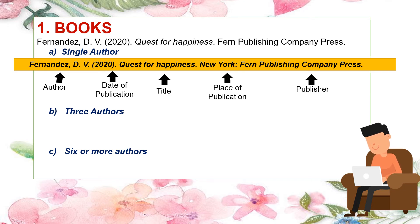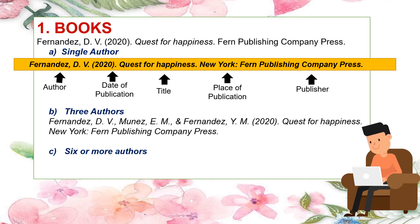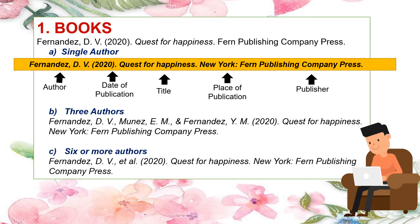When authorship reaches six, you use et al. Books with one-to-five authors take the usual format. For three authors: Fernandez, D.V., Munez, E.M., & Fernandez, Y.M. (2020). *Quest for Happiness*. New York: Foreign Publishing Company Press. Note that each author is separated by a comma and ampersand. For six or more authors: Fernandez, D.V., et al. (2020). *Quest for Happiness*. New York: Foreign Publishing Company Press. Note that after the first author, et al. is used — the Latin term et alia means 'and others,' representing the remaining authors of the book.